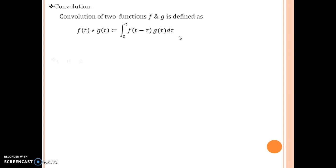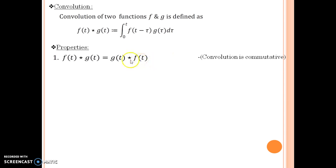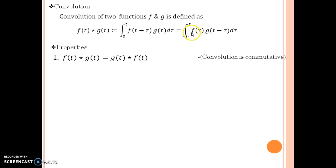Let us now move towards the properties of convolution. The first property is that convolution is commutative, that is f star g is equal to g star f. Due to this property, our definition has an alternate version as well: the integral from 0 to t of f of tau times g of t minus tau d tau. This allows us to choose f as a function of tau or g as a function of t minus tau, and similar freedom holds for g. So we can wisely use either definition, whichever suits us.